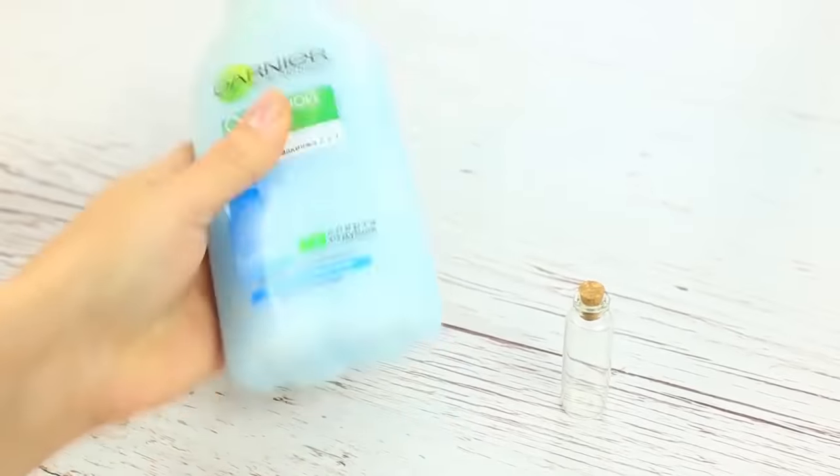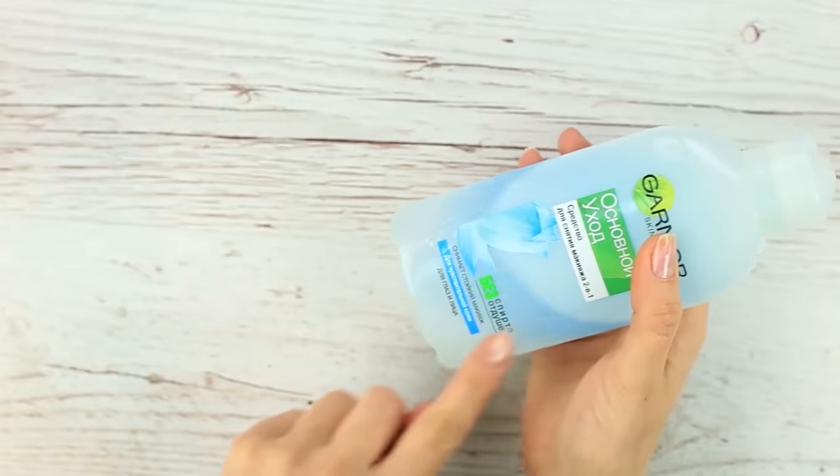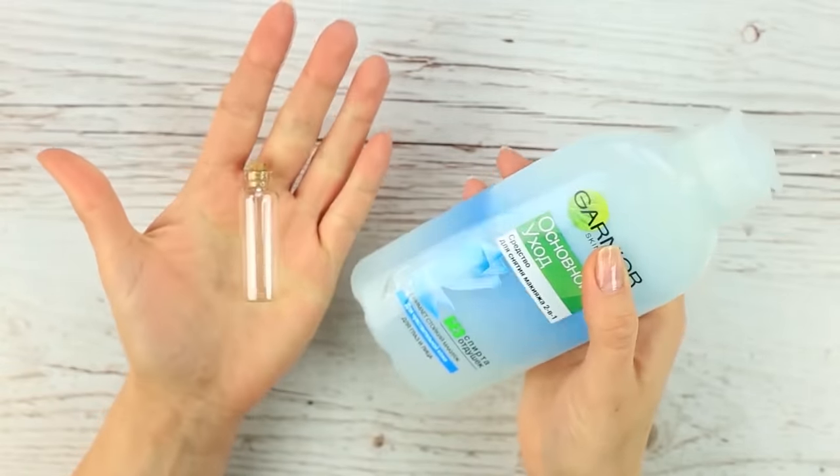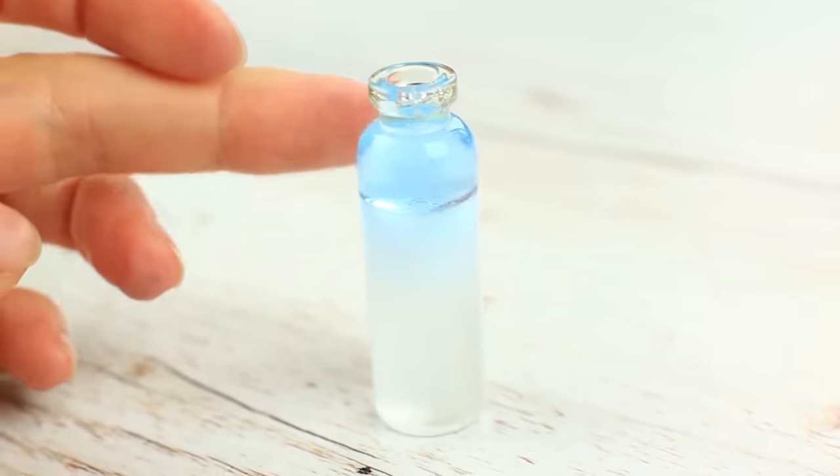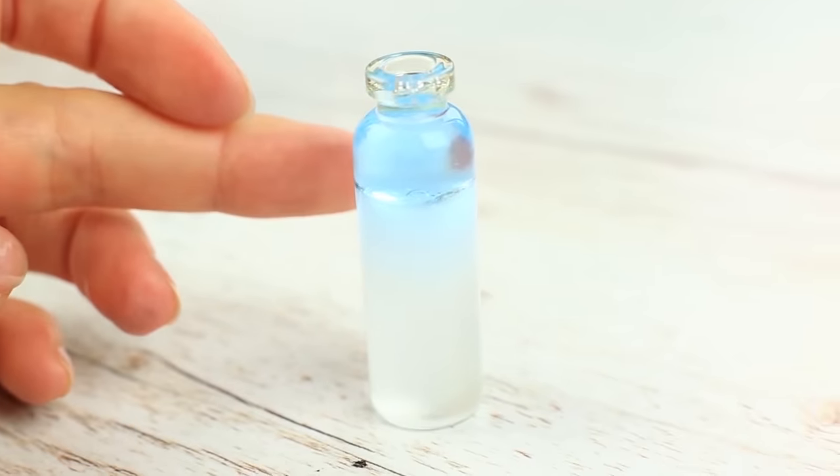Shake the bottle to mix the layers. The liquid is mixed and turns pale blue. And put both into the vial. Fill the vial and let it stay for a while. A few minutes later, the liquid layers become visible.